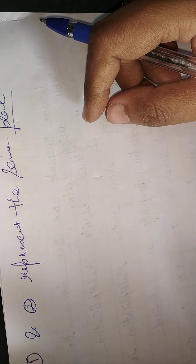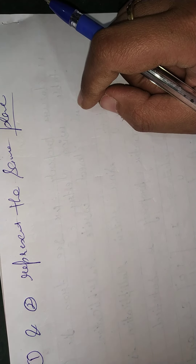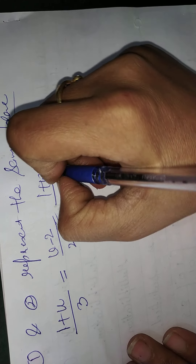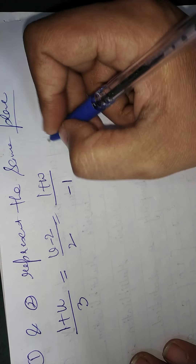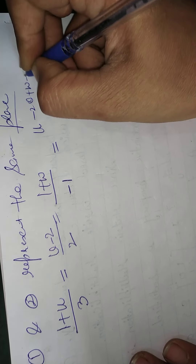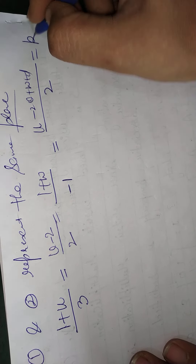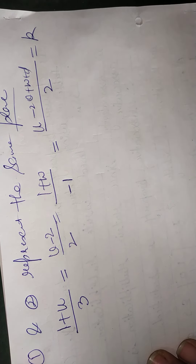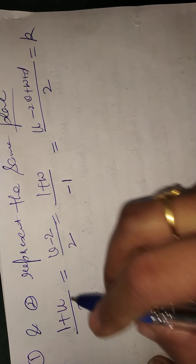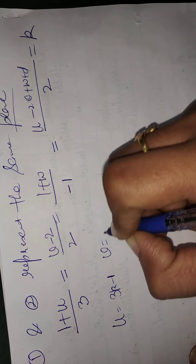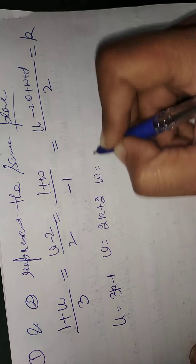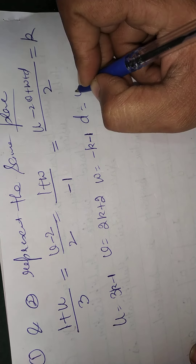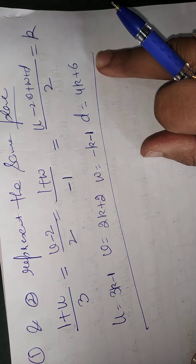If two plane equations are given and they represent the same plane, their coefficients need not be equal but their ratios will be the same. So (1 + u)/3 = (−2 + v)/2 = (1 + w)/(−1) = (u − 2v + w + d)/2 = k (say). From this relation you can find the values of u, v, w, and t in terms of k.